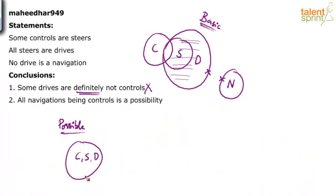It can be drawn this way. If I take this as a possible diagram — the first two statements are enough for checking the first conclusion. In this possible diagram, the conclusion says some drives are not controls, but here we find that all drives are controls. All the drives are controls, and the moment you find all drives to be controls, 'some drives are not controls' becomes wrong. So we can conclude that the first conclusion is wrong.